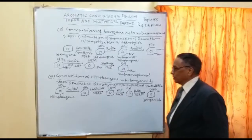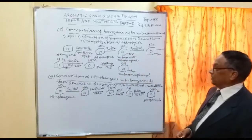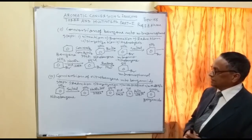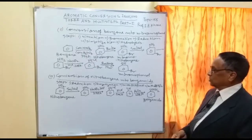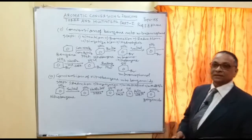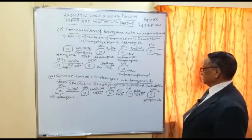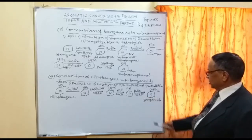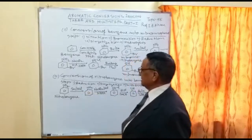Conversion number three is the conversion of nitrobenzene into benzamide, which involves four steps. The reaction conditions are: number one — reduction; number two — diazotization; number three — treatment with KCN to introduce the CN group; and number four — treatment with hydrogen peroxide in alkaline medium to get benzamide.